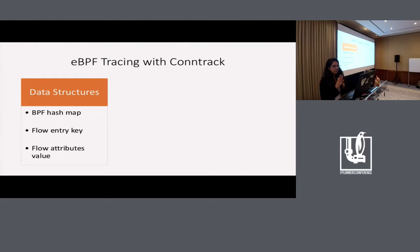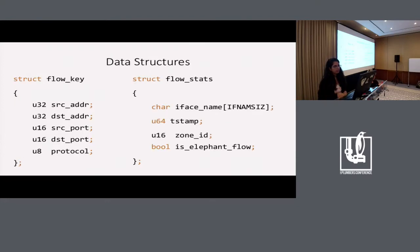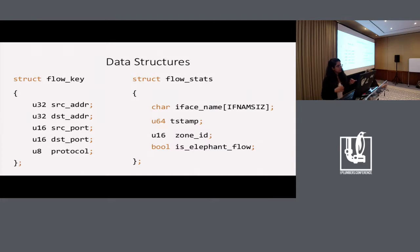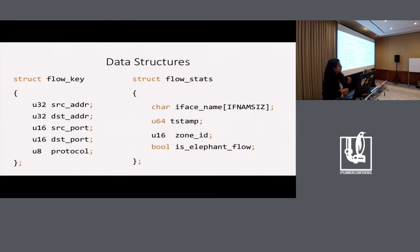Here are the data structures the eBPF programs use. The eBPF program creates a BPF hash map to keep track of additional flow attributes. The flow key is a five-tuple used to identify a flow. The flow stats structure has additional attributes: the interface the flow originates from, a timestamp for tracking flow duration, a zone identifier, and a flag indicating whether a flow is an elephant flow.